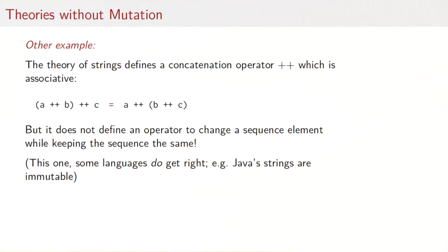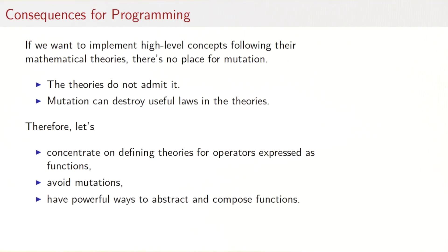Let's look at another example: strings. Most programming languages have strings and they would also define a concatenation operator. Let's write that ++ here. One of the laws for concatenation is that it's associative. So (a ++ b) ++ c is the same as a ++ (b ++ c). But again, the theory does not define an operator to change a sequence element while keeping the sequence the same. This one actually some languages do get right. For instance in Java, the type of strings is immutable. It does not give you an operator to change a character in the string while keeping the string the same.